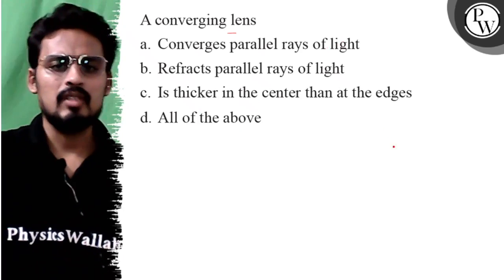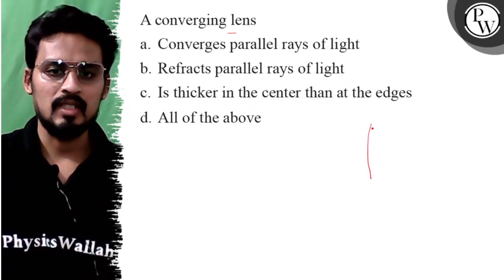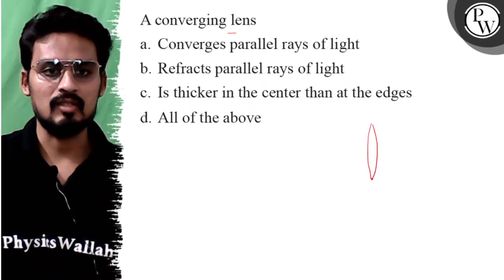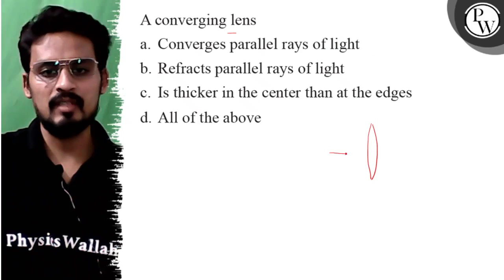So what is a converging lens? We know what is a converging lens - it converges rays of light. Okay, so converges parallel rays of light, that's right.